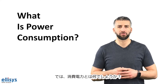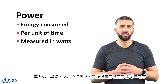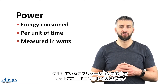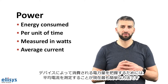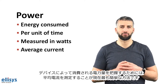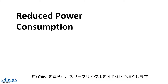So what is power consumption? Power is the energy consumed by a device per unit of time. It is measured in watts or kilowatts depending on the application in use. Measuring the average current is probably the simplest way to get a good idea of how much power is consumed by your device. At a high level, power consumption is mainly decreased in microcontroller applications and embedded systems by reducing radio communication and increasing sleep cycles as much as possible.